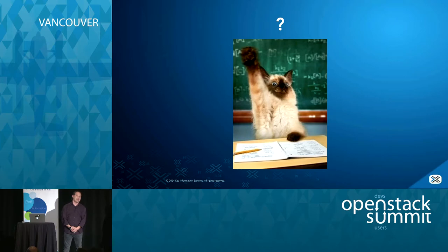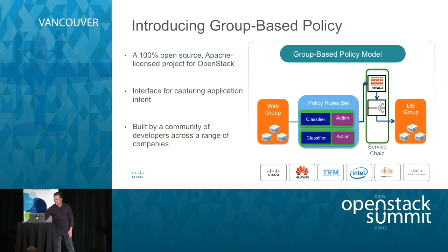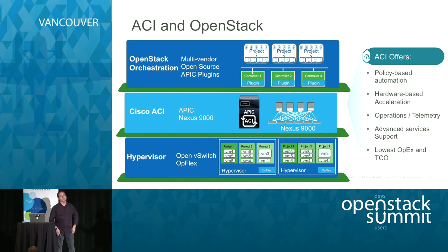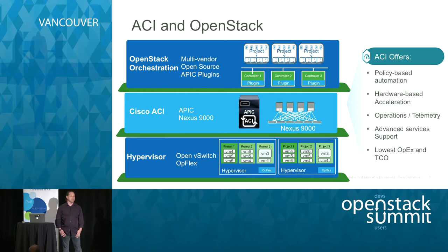Question: you mentioned in one of the slides that the fabric provides advanced services — could you elaborate on that? The fabric has the ability to do stateless ACL behavior — stateless enforcement of policy rules. When you want to handle stateful policies, the fabric can redirect traffic to a network service device that can then deliver that capability. We're working with a number of ecosystem partners that have solutions in that space.